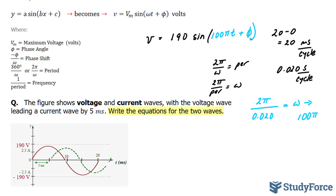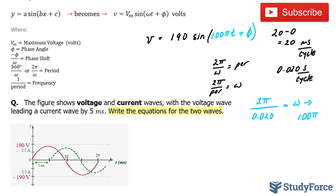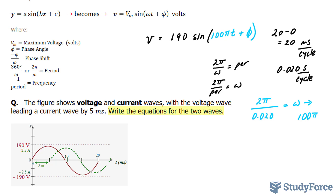Notice that the sine wave starts at 0 and 0, which tells us there is no phase shift involved. If there is no phase shift, then phi equals 0. We end up with the final voltage function: V is equal to 190 sine of 100 pi t — and don't forget the volts.